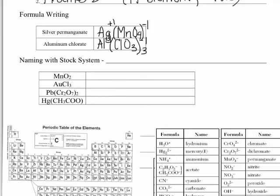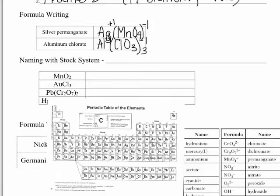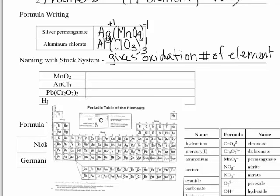The stock system is part of the IUPAC naming system. The reason why we have it is because when you look at manganese, it actually has four different oxidation numbers. So it could make four different oxide formulas. It's important that when you name something that has multiple oxidation numbers, you say what the oxidation number is. For naming with the stock system, we give the oxidation number of the element with multiple positive oxidation numbers. We only do this if that element is the first element in the compound.